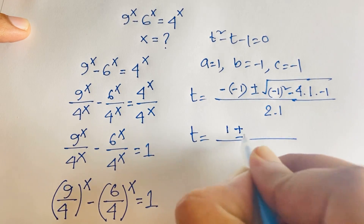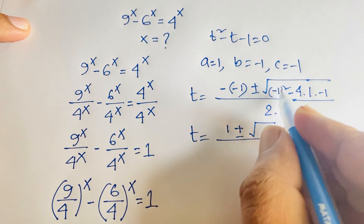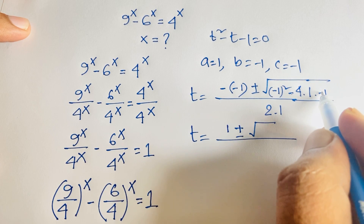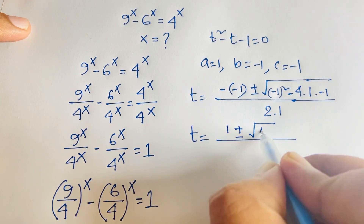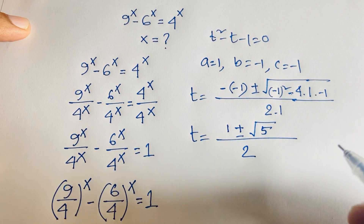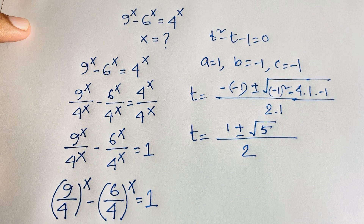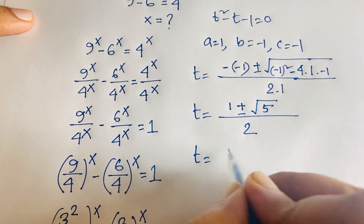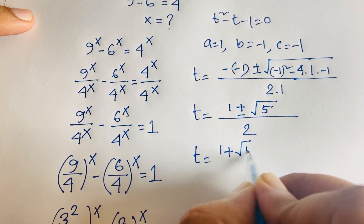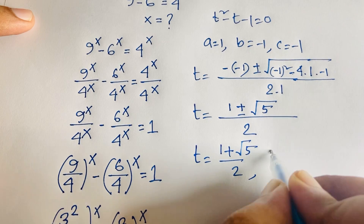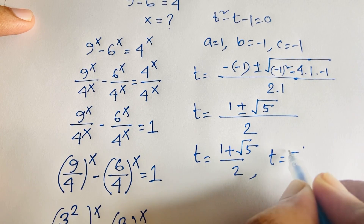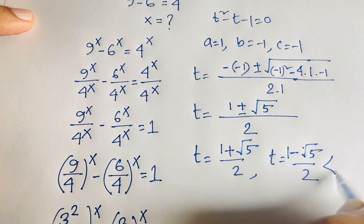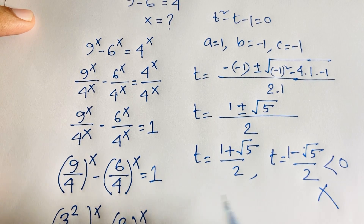Substituting: t equals 1 plus or minus the square root of 1 minus 4 times 1 times minus 1, over 2. That simplifies to t equals (1 plus or minus square root of 5) over 2. The negative root, (1 minus √5)/2, is less than zero, so we discard it.